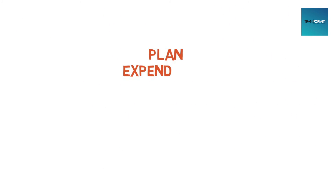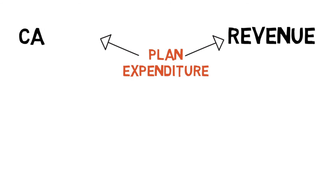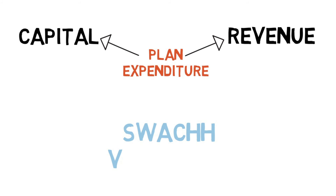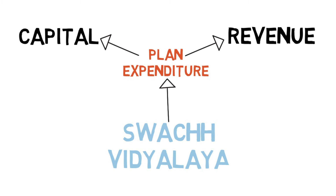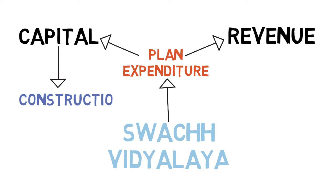Planned expenditure too has its own revenue and capital components. For example, the money spent on the Swach Vidyalaya scheme is a planned expenditure. The money spent on the actual construction of toilets under the scheme is capital expenditure.